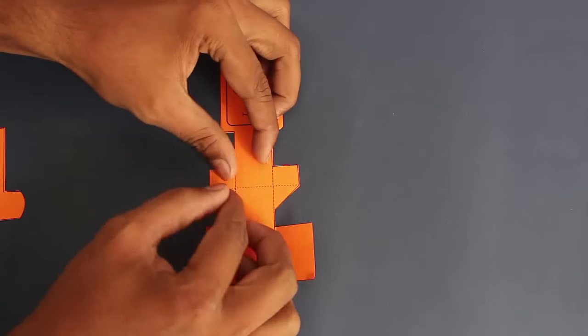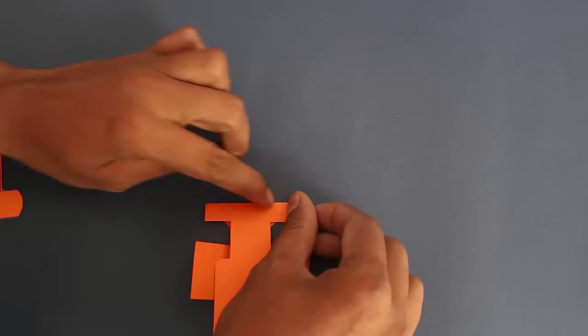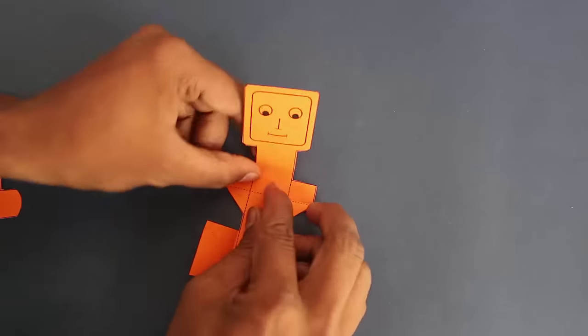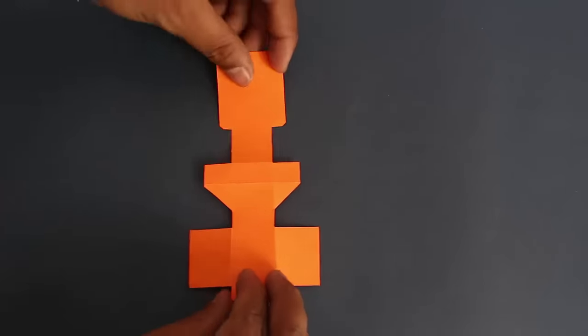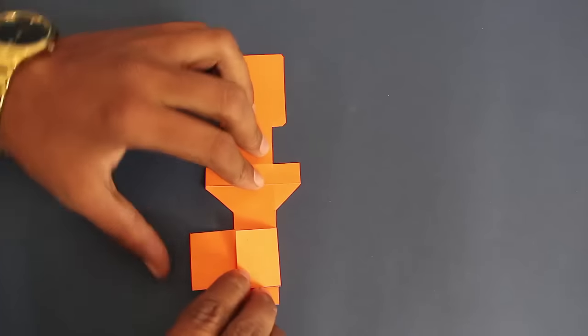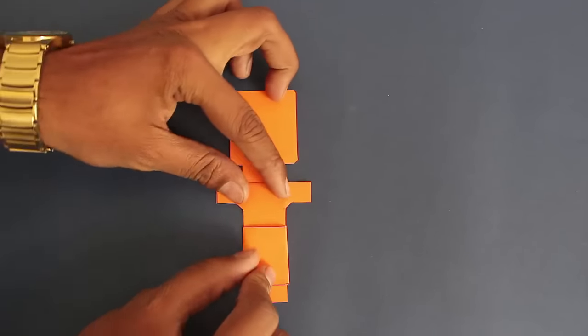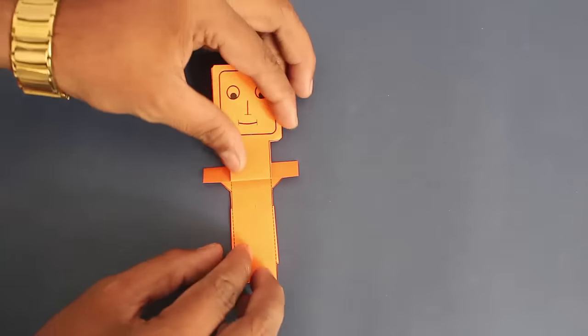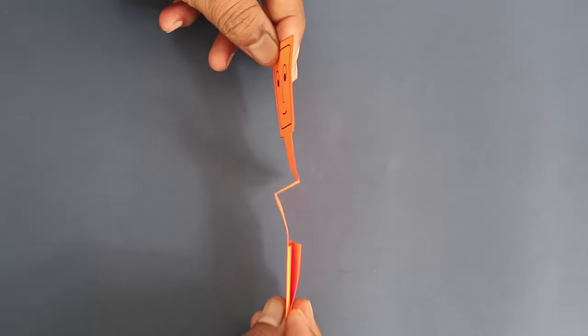Then fold the keepers backwards. These are the two keepers. Now try moving the model and you will see a Z spring, which is the heart of the matter.